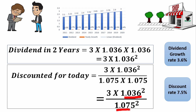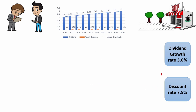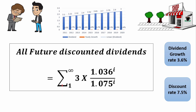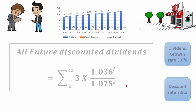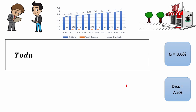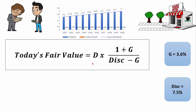This is discounting the dividend at 7.5% per year. So if we look at all the future discounted dividends, we get an infinite series — the sum of all dividends from next year to infinity — of $3 multiplied by 1.036 to the power of i, divided by 1.075 to the power of i, where i is the year we're talking about. If we develop this series, we come up with today's fair value as the current dividend multiplied by (1 plus the growth rate), divided by (the discount rate minus the growth rate).